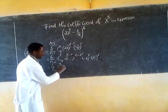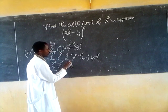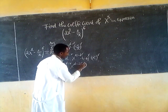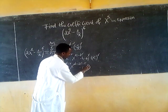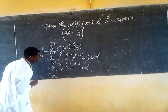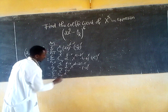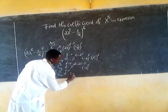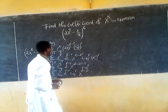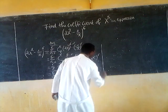So the general term becomes: combination of 6 choose r, times 2^(6 minus r), times (-1)^r, times x to the power of 12 minus 2r minus r, which gives x to the power of 12 minus 3r.